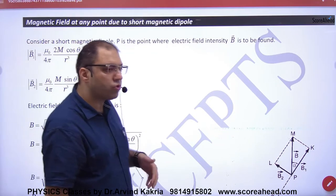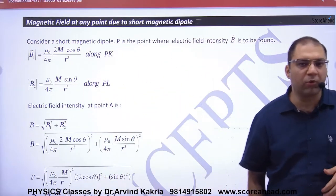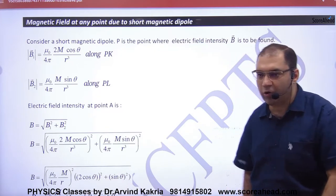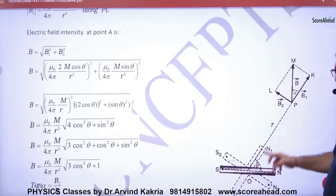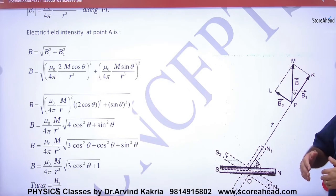Magnetic field at any point due to short magnetic dipole. Remember that in electrostatics we had done this topic - it's a dipole. We had E at any point, we had B at any point.